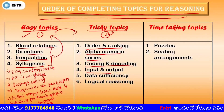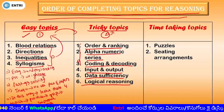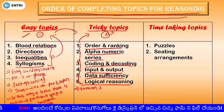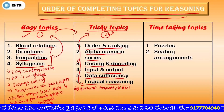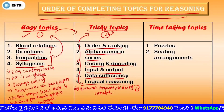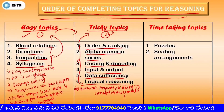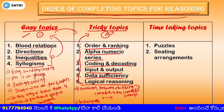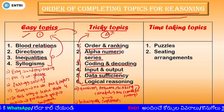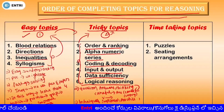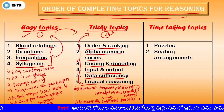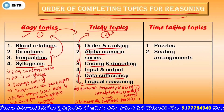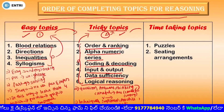Under the tricky topics, we have order ranking, alphanumeric series, coding and decoding, input and output, data sufficiency, and logical reasoning. We will consider the tricky topics. It takes 3 different problems — you need to learn about the question and the answer options, and your approach is easy to understand. Make sure you get the answers right. Then you need to use the techniques to make tricky topics easier.